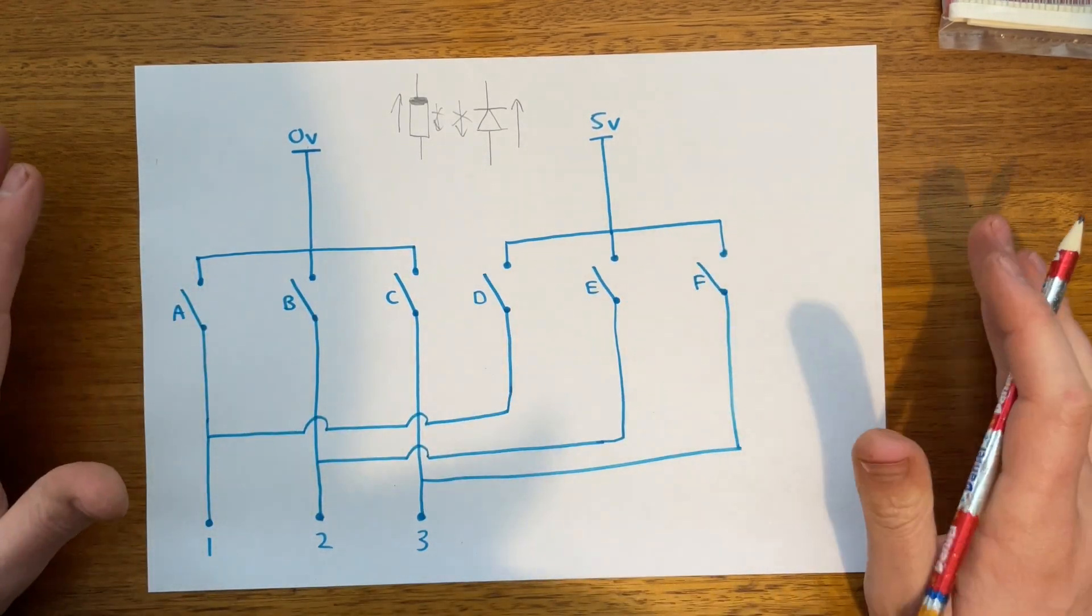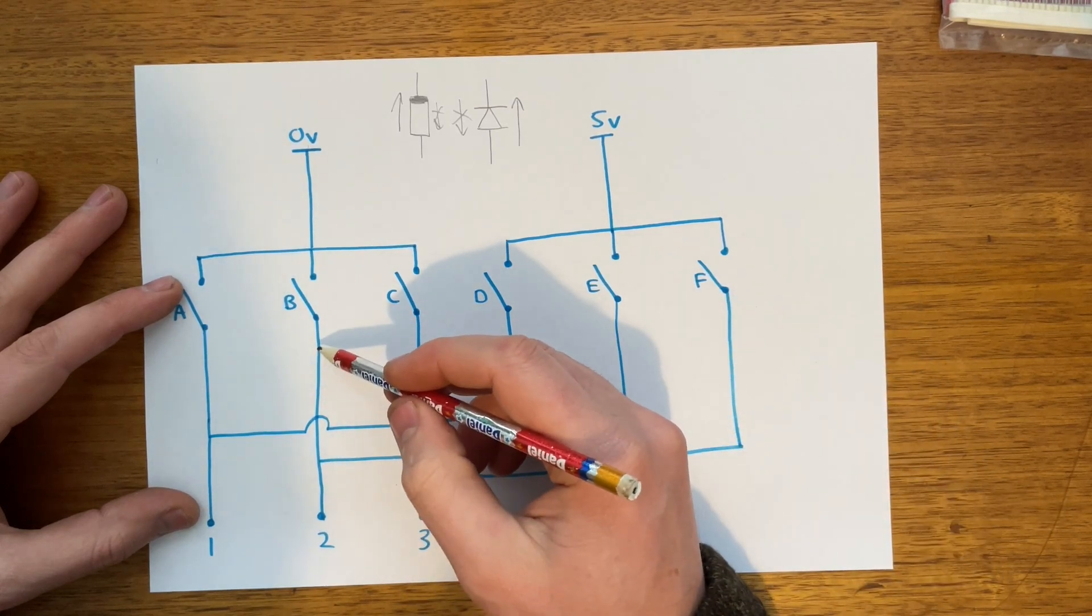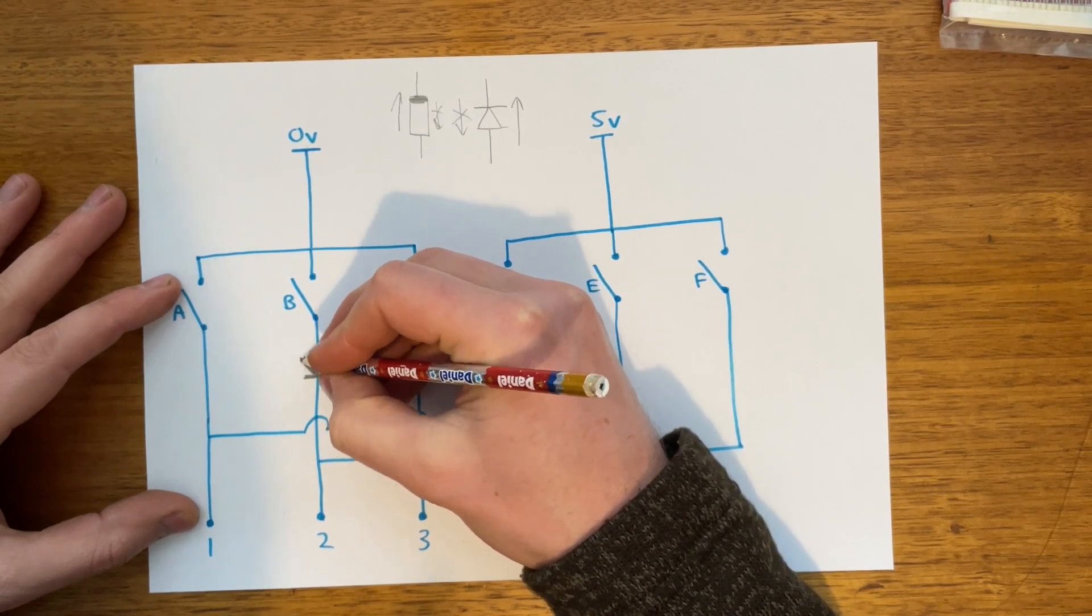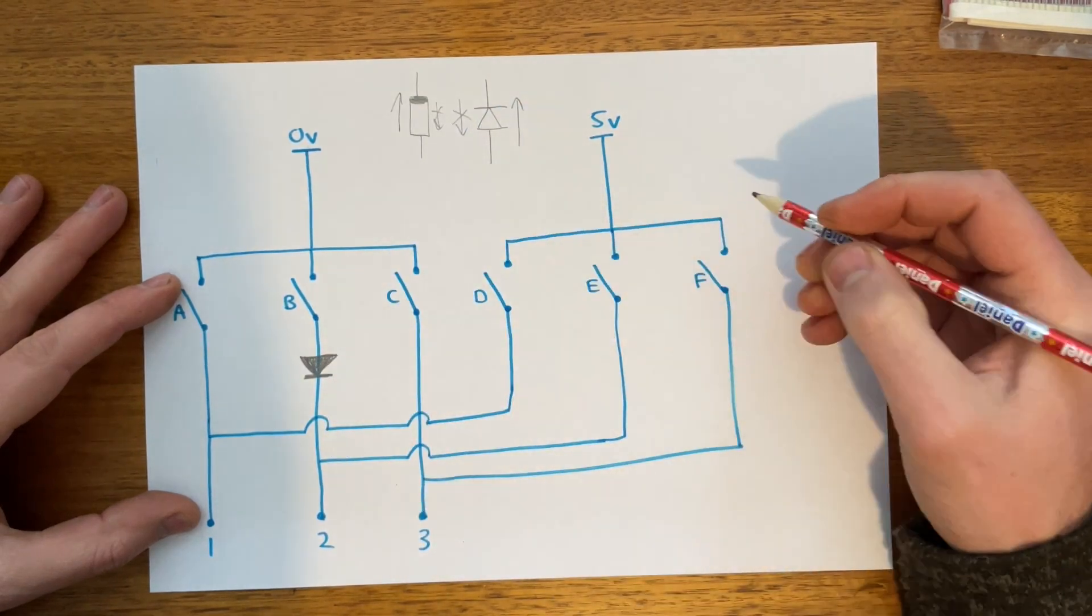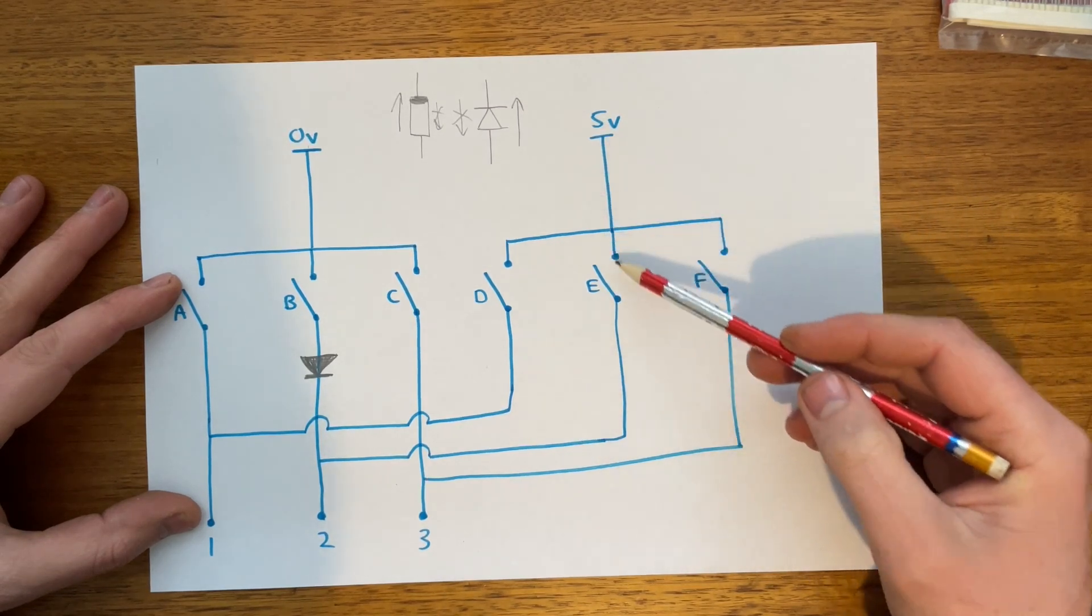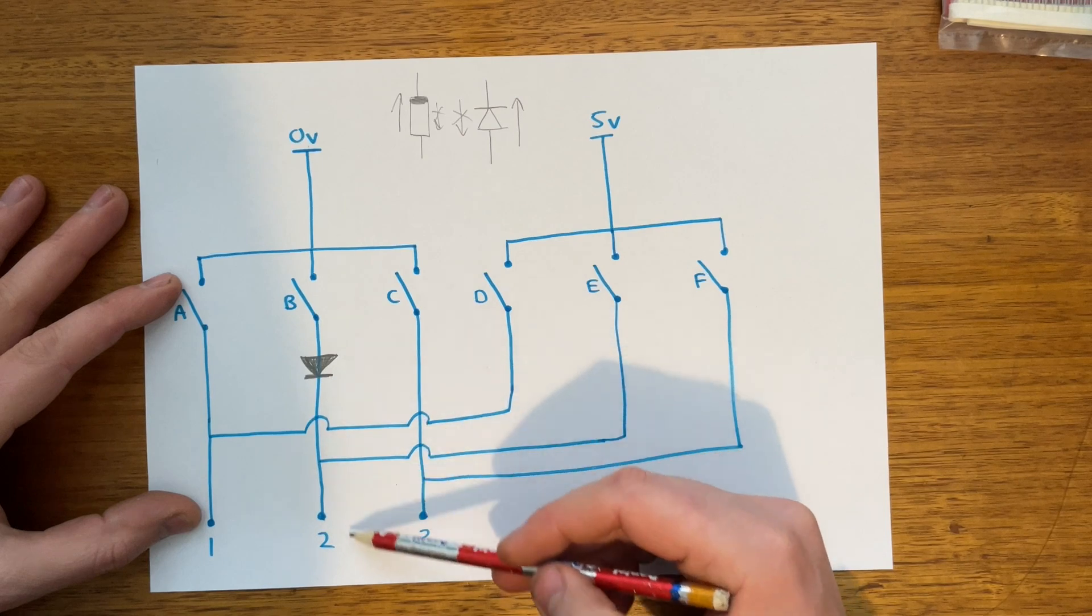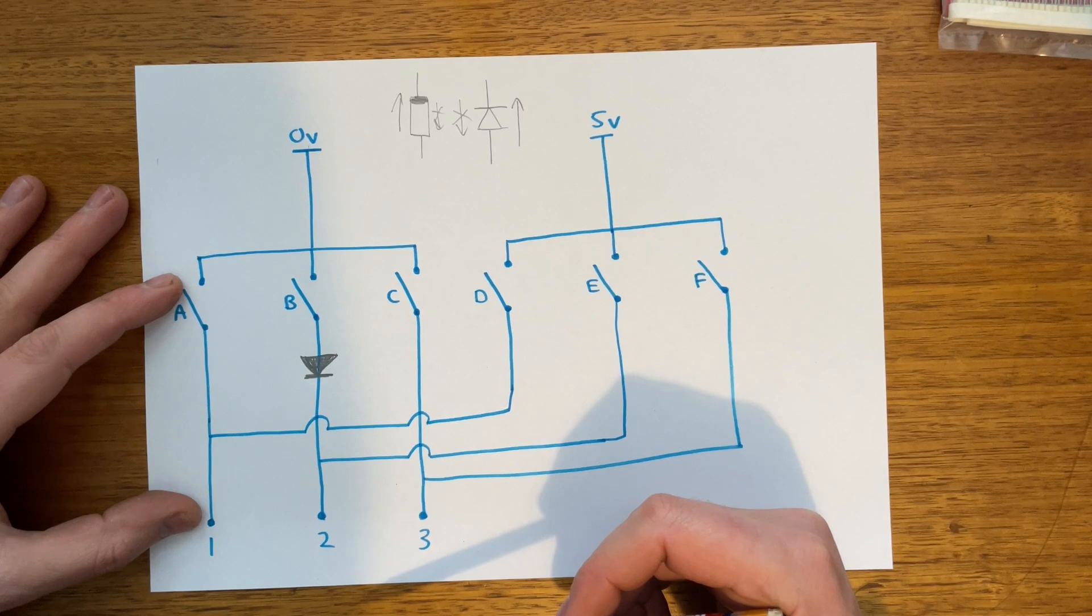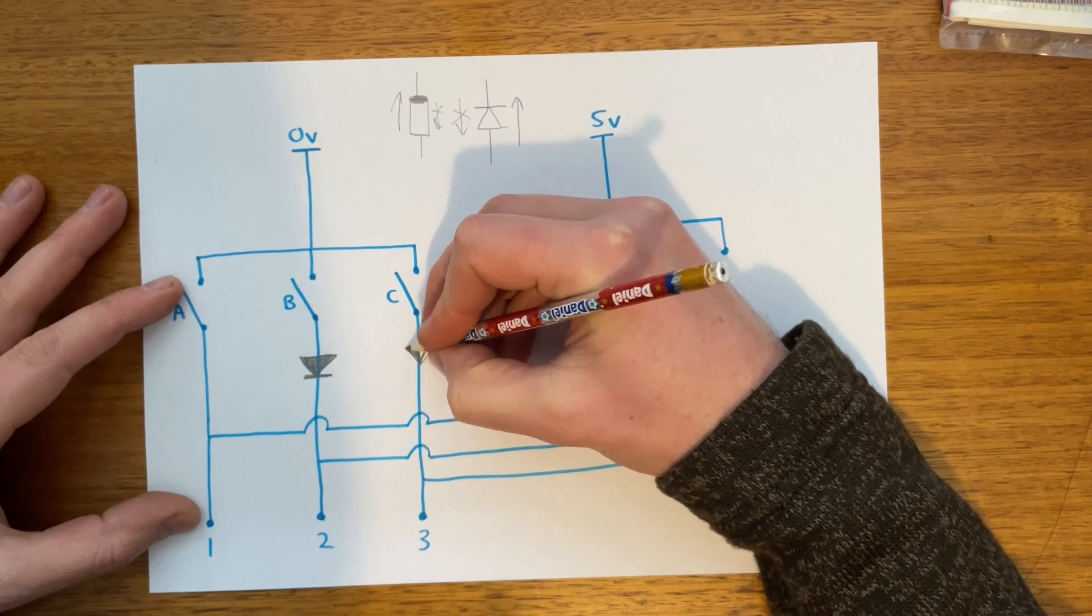And so, to solve the problem that we talked about, we have to put diodes here. So, that current can't actually flow back up here. So, put a diode there. So, now, if B and E are pressed, 5 volts will be here. So, current will flow down here, but it can't go up to 0 volts if the B is also pressed. And so, therefore, you'll get 5 volts at pin 2. So, every single one needs a diode. So, I'll draw them in.